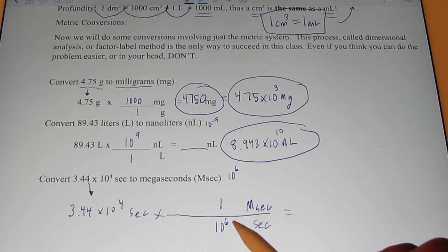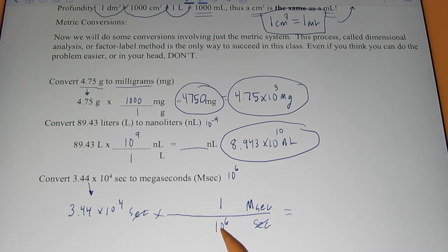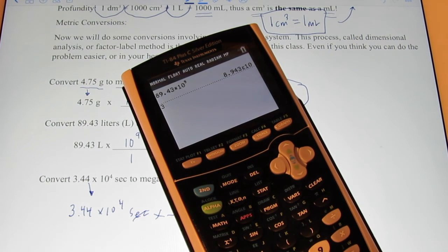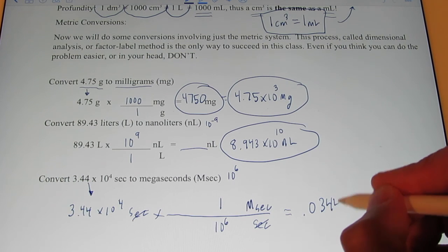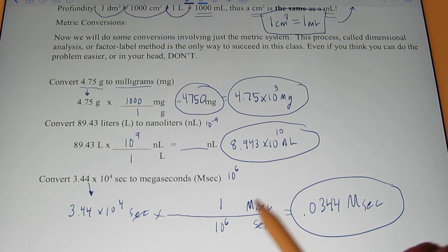Now, this time, we need to divide by a million. Seconds cancel out. We're going to take this number and divide it by ten to the sixth. Whenever we have a number other than one on the bottom of my conversion factor, we're going to divide instead of multiply. Let's plug this in. We get .0344 megaseconds. So, 3.44 times ten to the fourth seconds is the same as .0344 megaseconds.